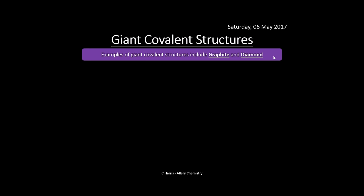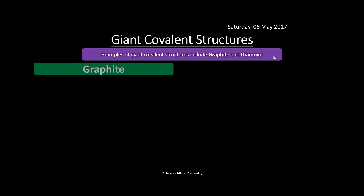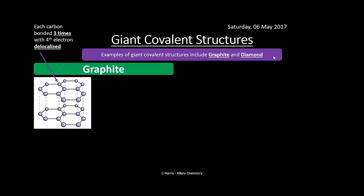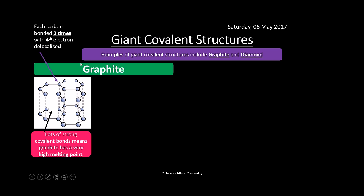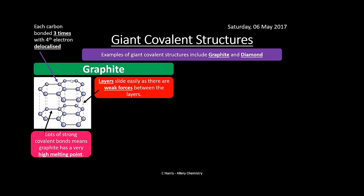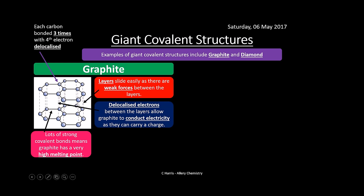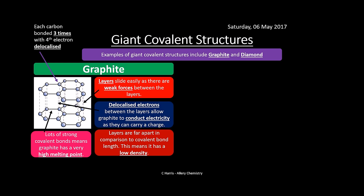Giant covalent structures are much larger. These include graphite and diamond. Graphite is made up of hexagons where each carbon is bonded three times and the fourth electron is delocalized. Lots of strong covalent bonds means a very high melting point — loads of energy needed to break them. Graphite's layers have weak forces between them and can slide over each other. The delocalized electrons allow it to conduct electricity — unusual for a non-metal. Graphite also has low density because the layers are far apart compared to the covalent bond length.